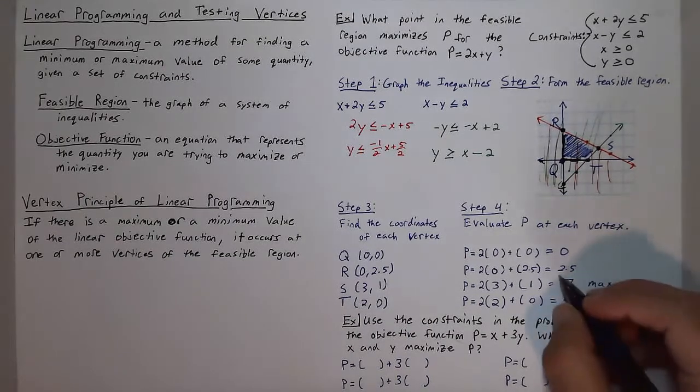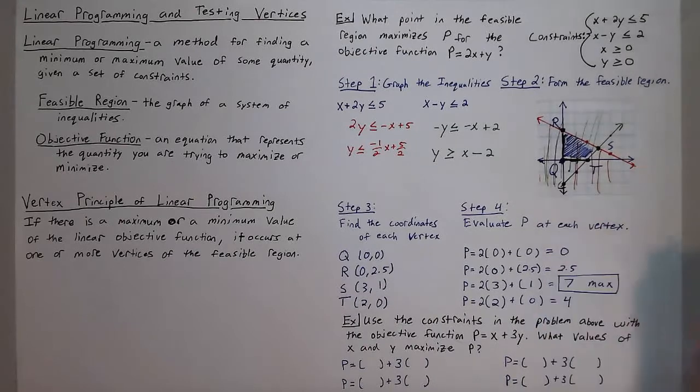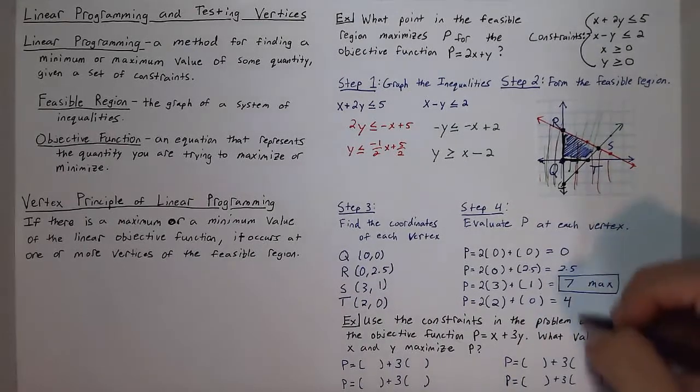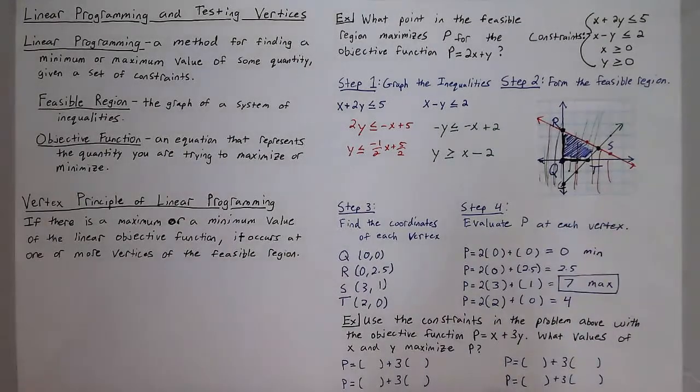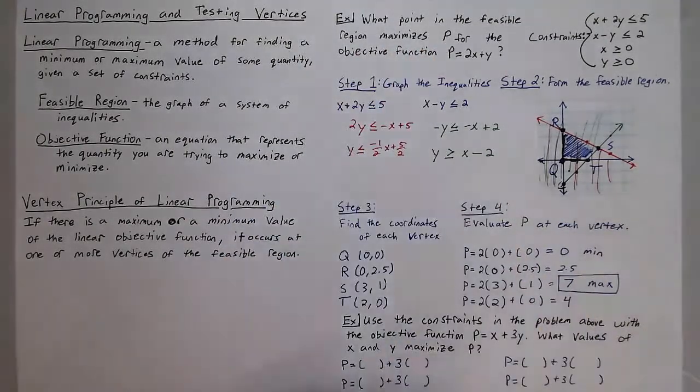So I'll put a little max here, and that is our maximum. And just to indicate that we also found our minimum, the lowest number is our minimum value. But since we're looking for the maximum, I'm just going to box in seven.